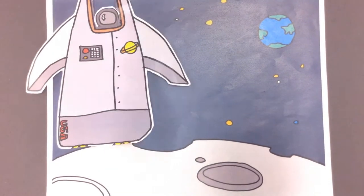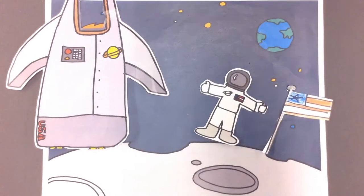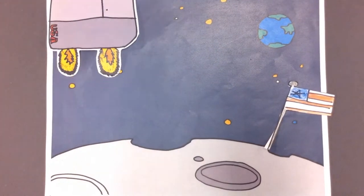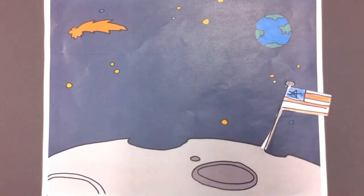On July 21, 1969, Neil Armstrong was the first to climb off the spacecraft and the first man to walk on the moon. He said, that's one small step for man and one giant leap for mankind.